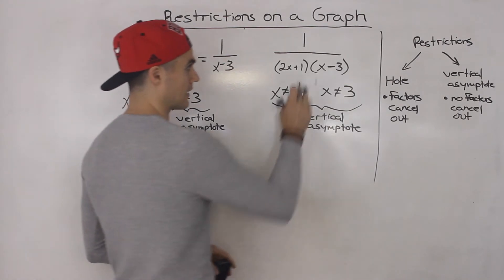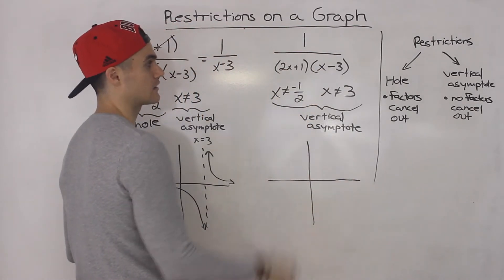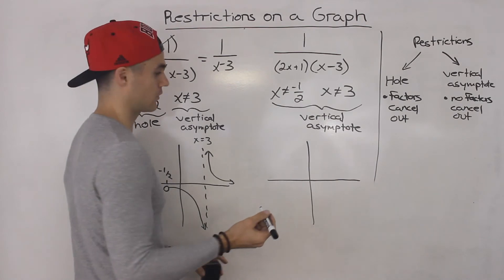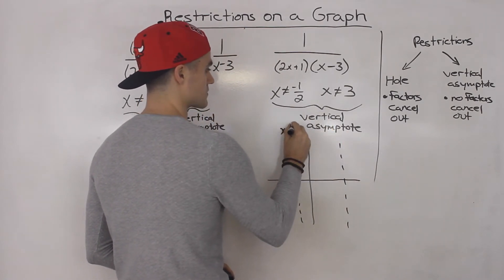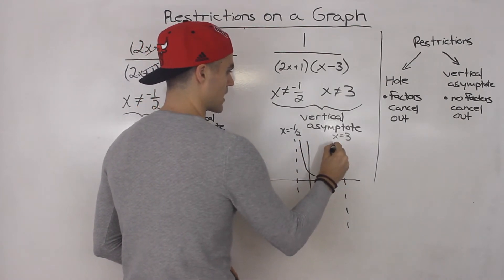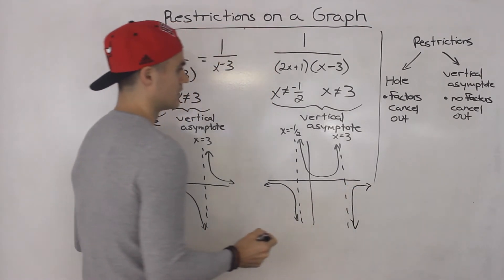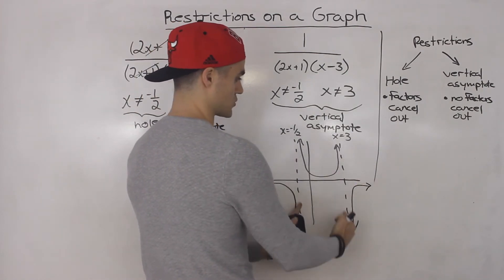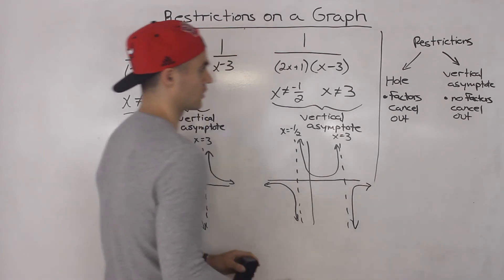If you were to graph the second expression — the reciprocal of a quadratic — you don't have to know how to graph these yet; this is actually in advanced functions in grade 12. But I'll show you how it looks anyway just so you can get a visual. Both of those restrictions are vertical asymptotes, so there are no holes. It looks like there's a quadratic in between and then two outer parts. My main point is that those two restrictions are both vertical asymptotes, versus the first expression where it was a vertical asymptote and a hole.